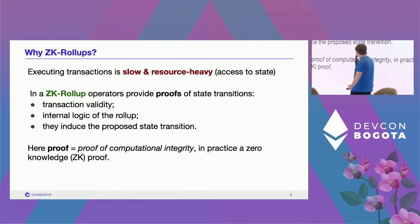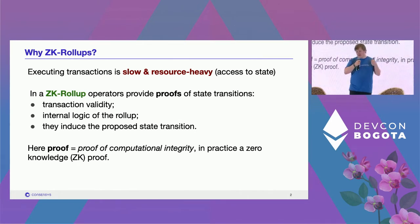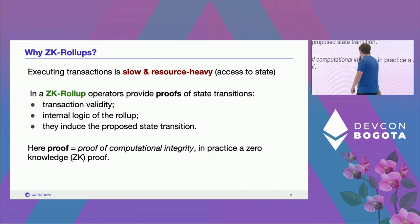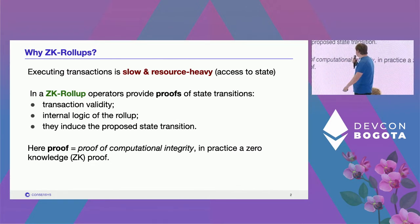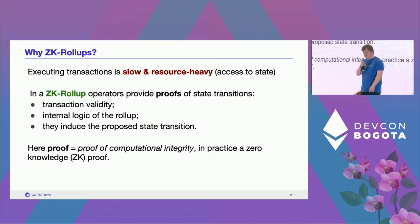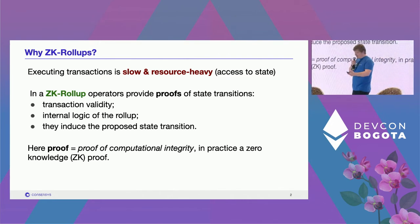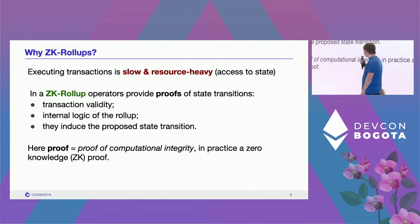The promise of a ZK rollup is to alleviate that workload from most of the nodes in the network. You have a powerful node, which is an operator, that provides proofs of state transitions. These proofs verify the validity of the transactions in the batch, the internal logic of the rollup, and the fact that they induce the proposed state transition. When we talk about proof, we mean proofs of computational integrity, implemented in practice as zero-knowledge proofs.